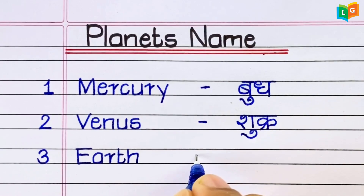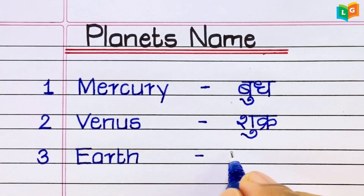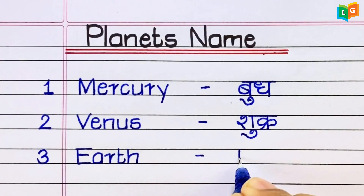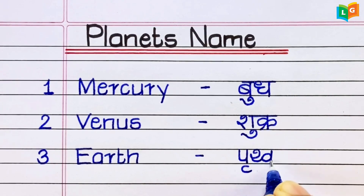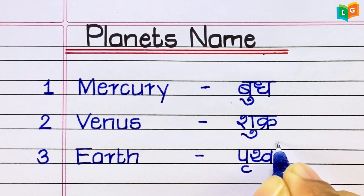E-A-R-T-H, Earth. Earth means Prithvi Graha.